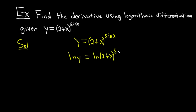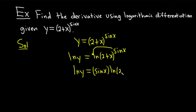So we have ln y equals ln of (2 plus x) to the sine x power. Now that we have the log, we can bring down the sine function using the logarithm power rule: ln y equals sine x times the natural log of 2 plus x. The power rule states that if you have p ln x, it equals ln x to the p — basically you can bring exponents down.